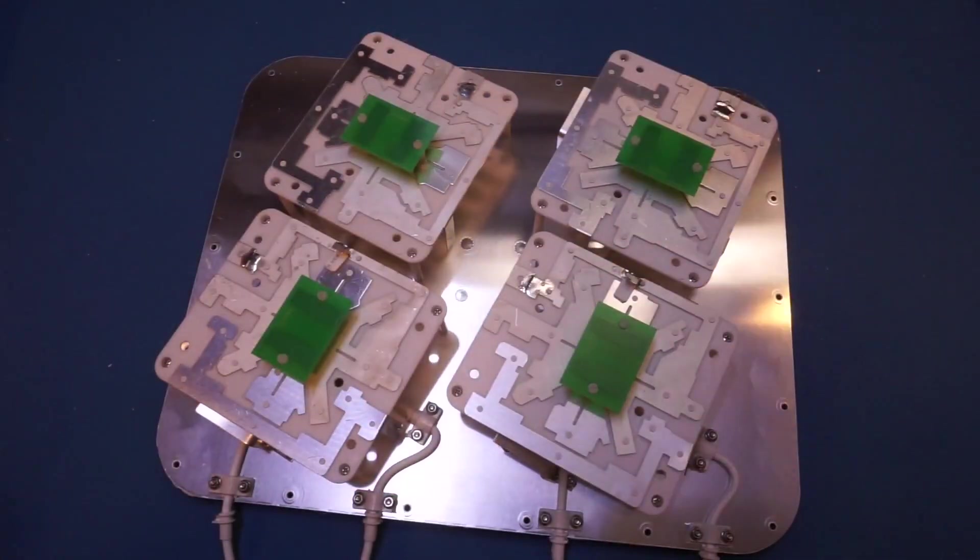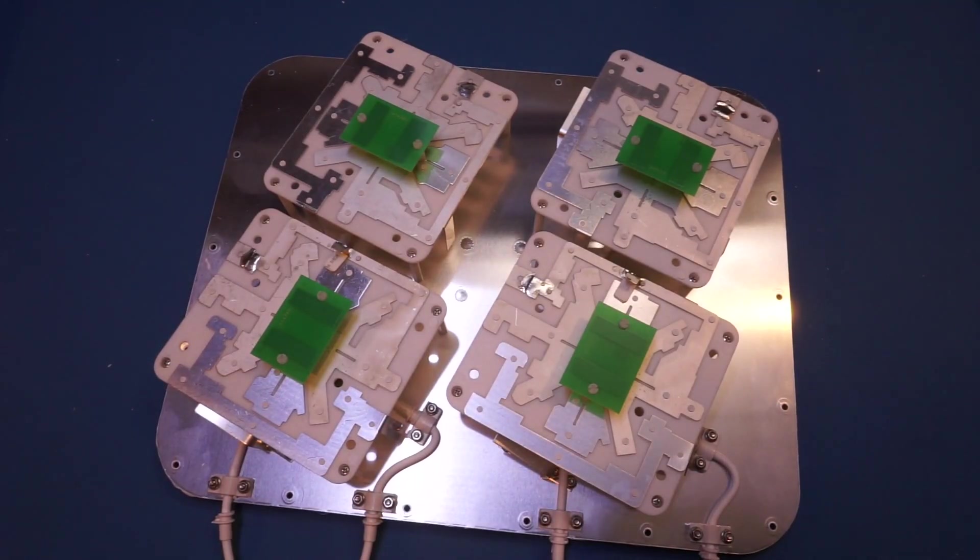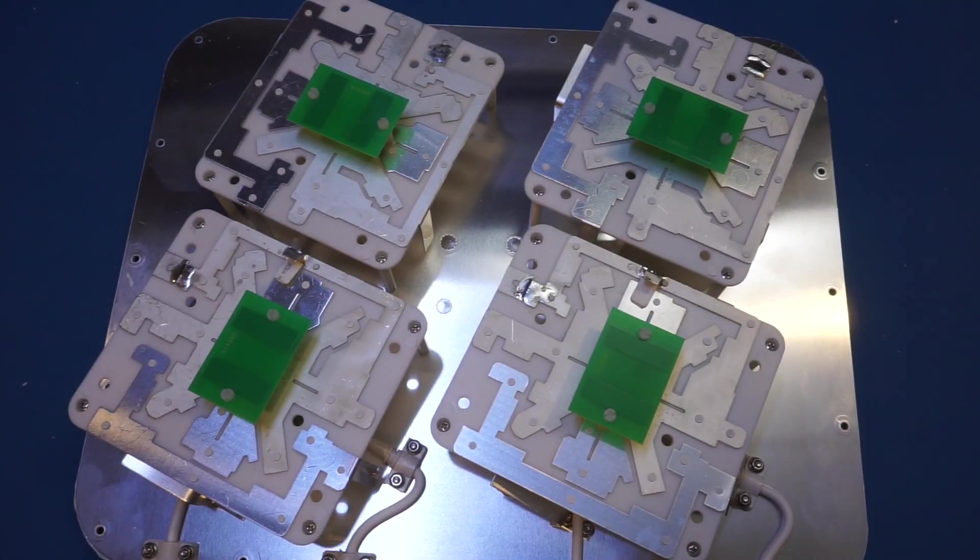I have already removed all the mounting screws at the back, so let me just remove the dome and we'll see what is underneath. Wow, this is quite a bit different than what I had imagined. What you can immediately see is that essentially all four antennas are mostly identical, besides their orientations.